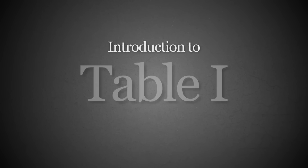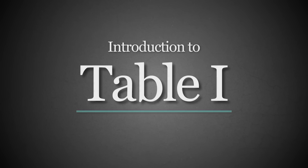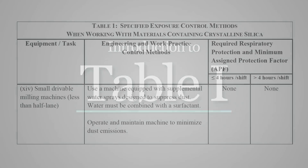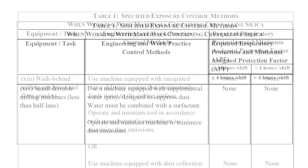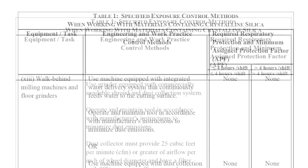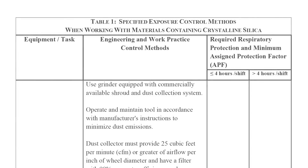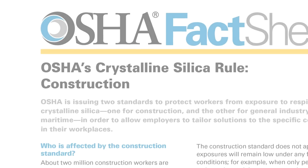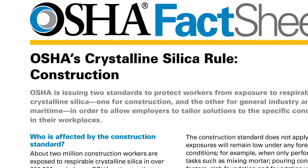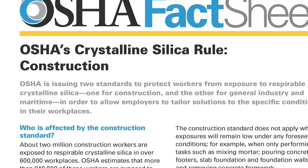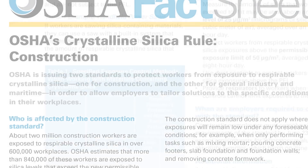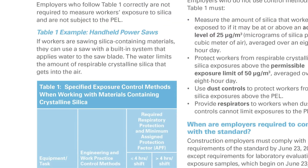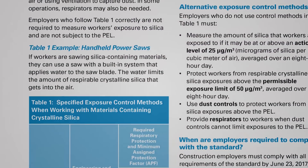Table 1 shows dust control methods for many common job site operations. According to OSHA's fact sheets, employers who follow Table 1 correctly are not required to measure workers' exposure to silica and are not subject to the PEL.